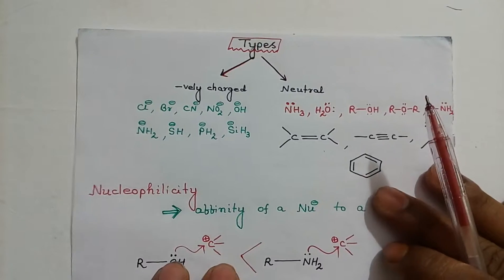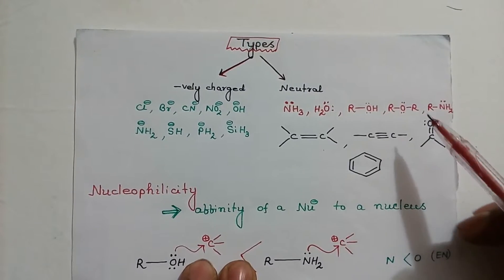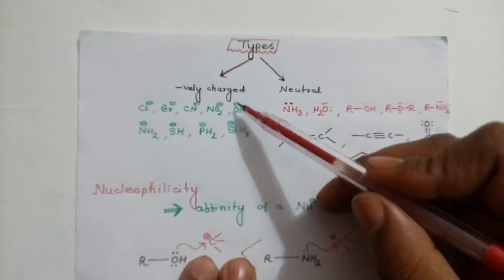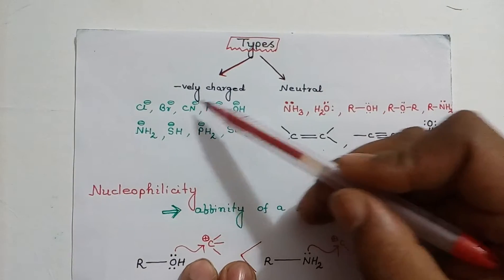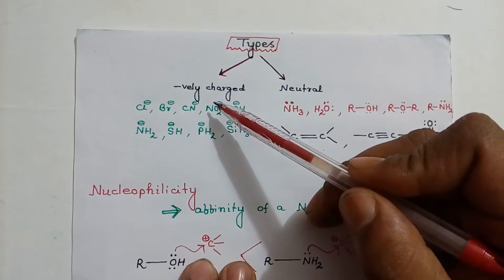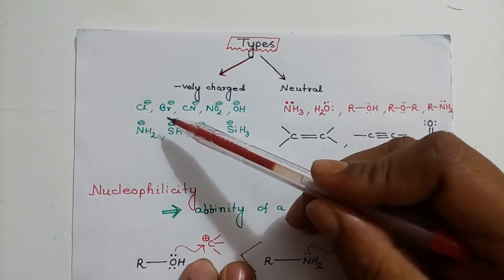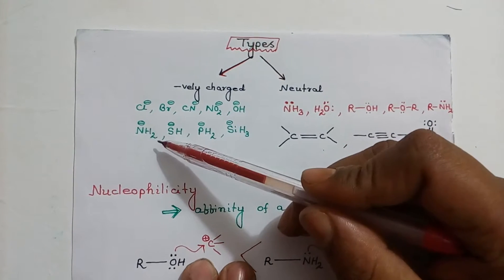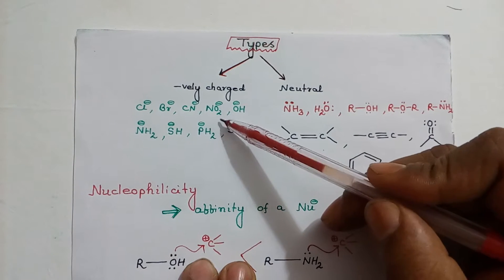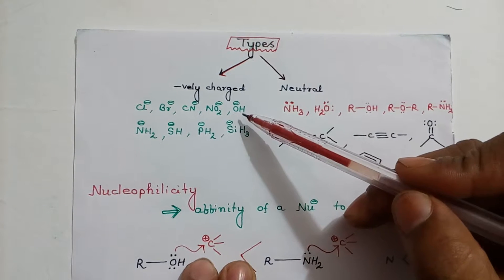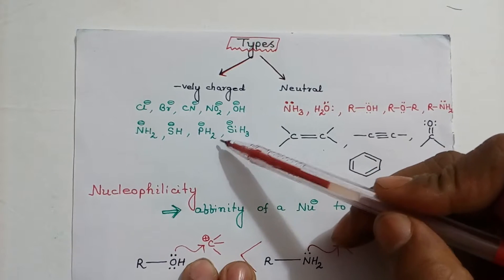Nucleophiles can be classified into two classes: negatively charged nucleophiles and neutral nucleophiles. Negatively charged nucleophiles are those nucleophiles which should contain negative charges. Chloride, bromide, cyanide, nitrate, hydroxide, etc. are negatively charged nucleophiles.